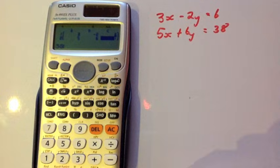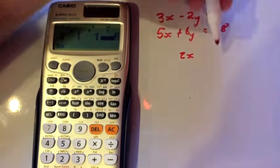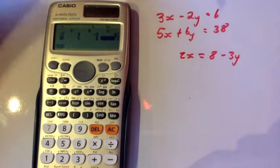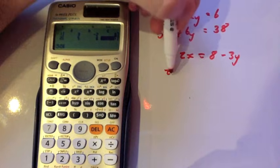Perhaps you had something like 2X equals 8 minus 3Y. What you would need to do in that equation is to add 3Y to both sides to get 2X plus 3Y equals 8.